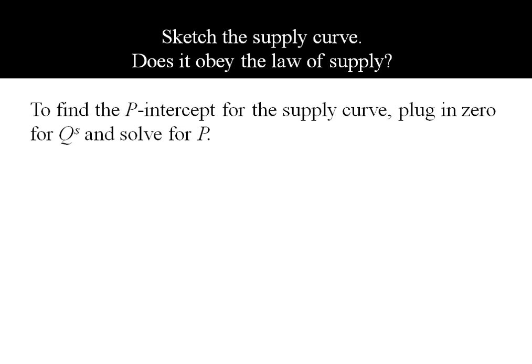The way we find the price intercept is we'll plug in 0 for quantity and then solve for P. So I've made the left-hand side 0 as I've plugged in for QS, and now it's straightforward to solve for P. We find negative 1.5.